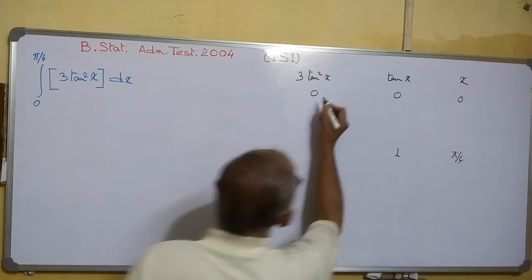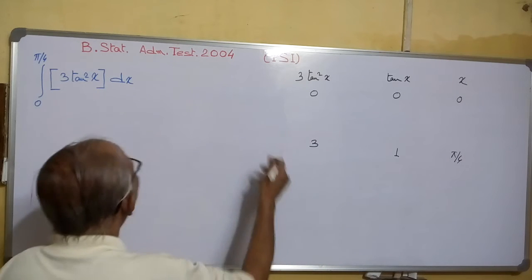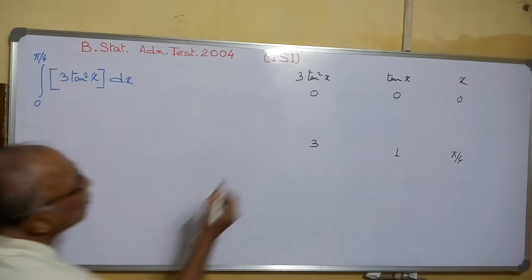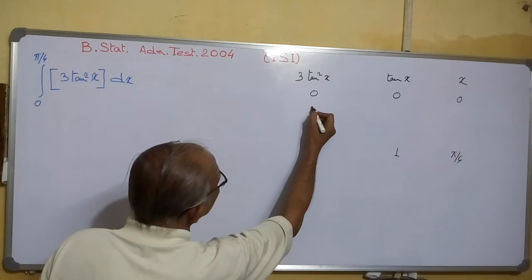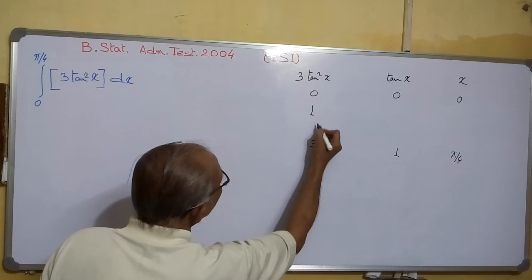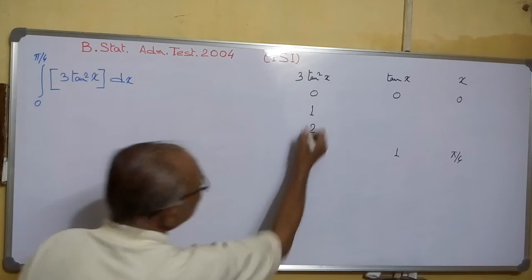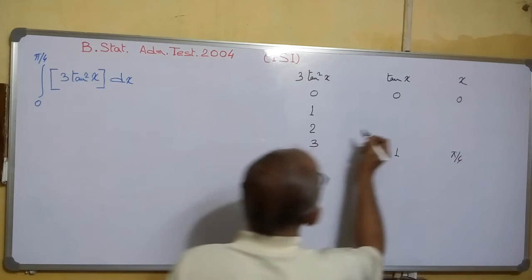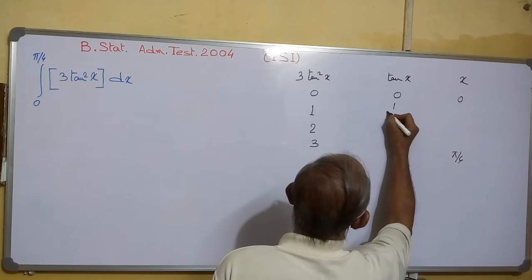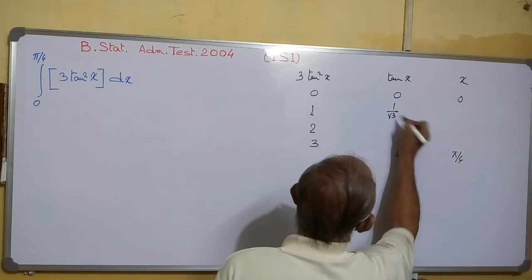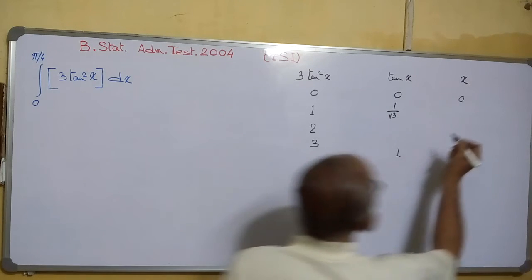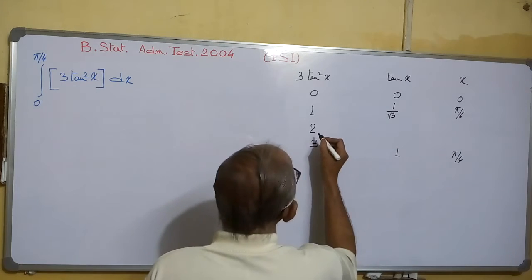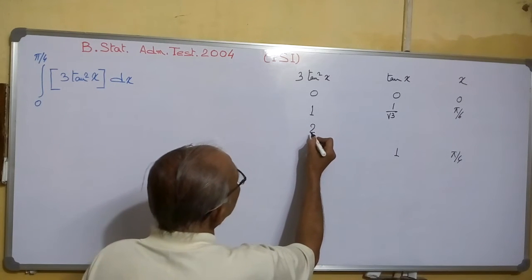Since this is greatest integer function, we require two values in between 0, 1, 2, 3. When it will be 3tan²x equals 1, that means tan x equals 1/√3, that is x equals π/6.